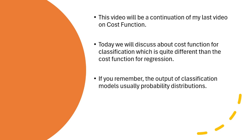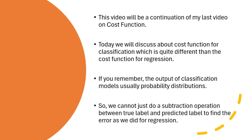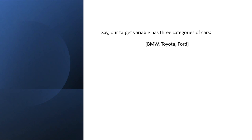If you remember, the output of classification models is usually probability distributions, and we cannot just do a subtraction operation between true label and predicted label to find the error as we did for regression. Let's have a look at an example.